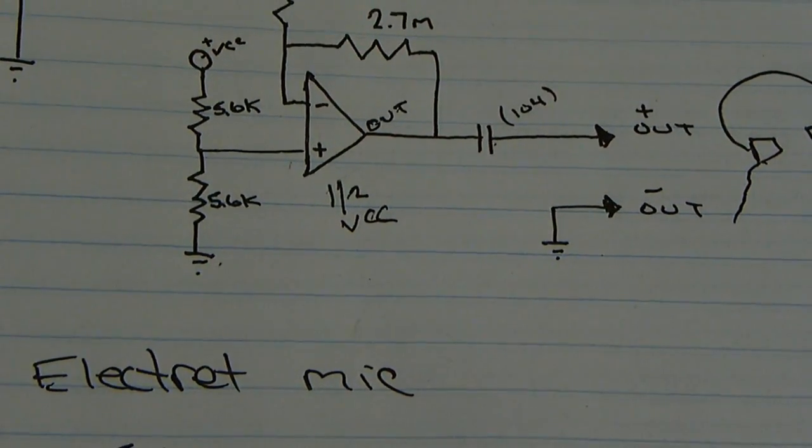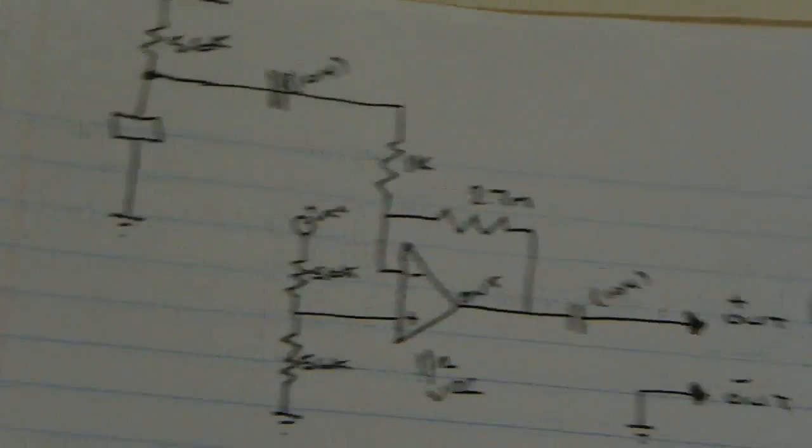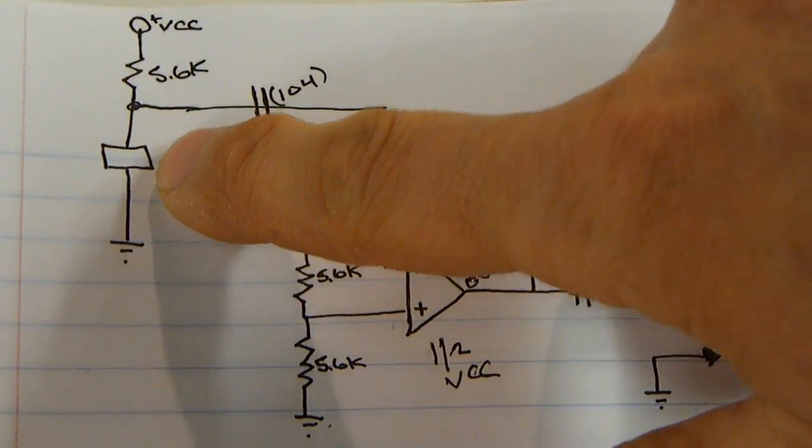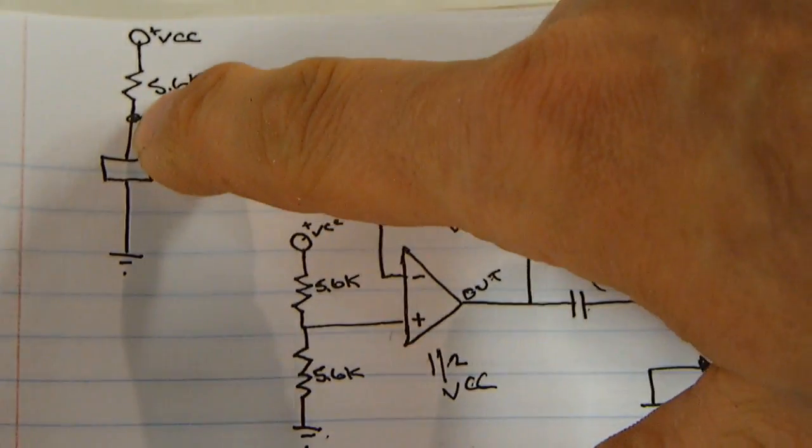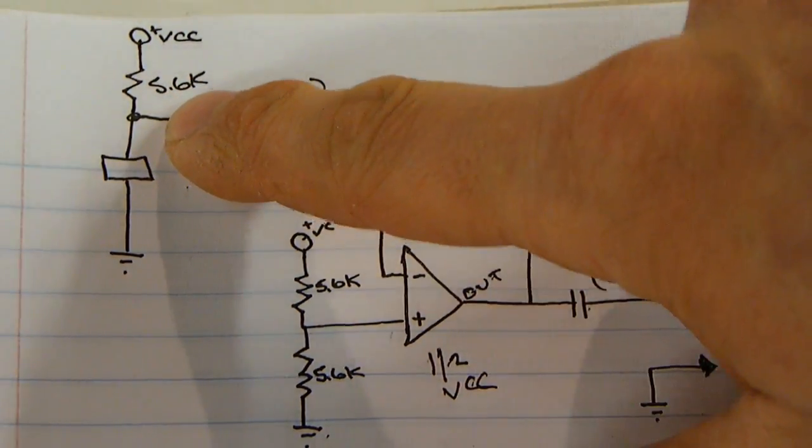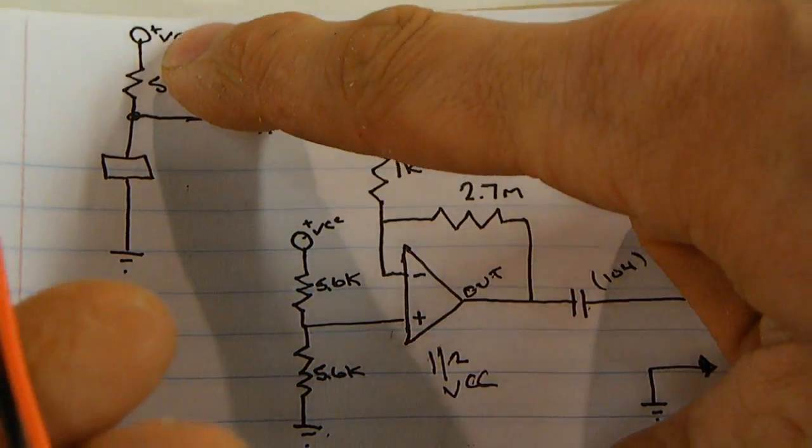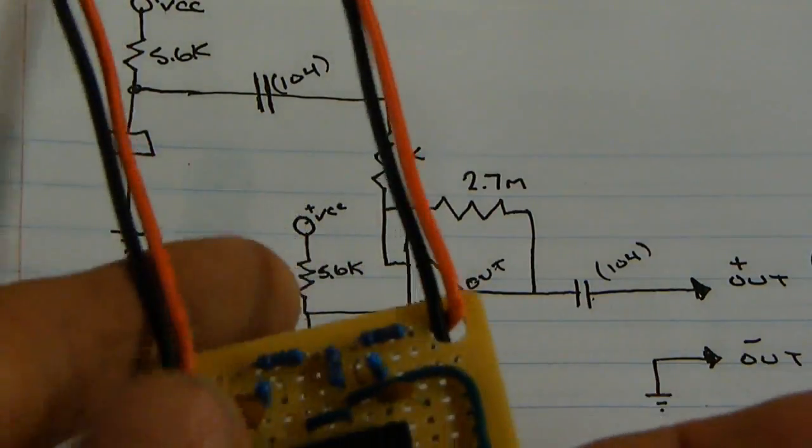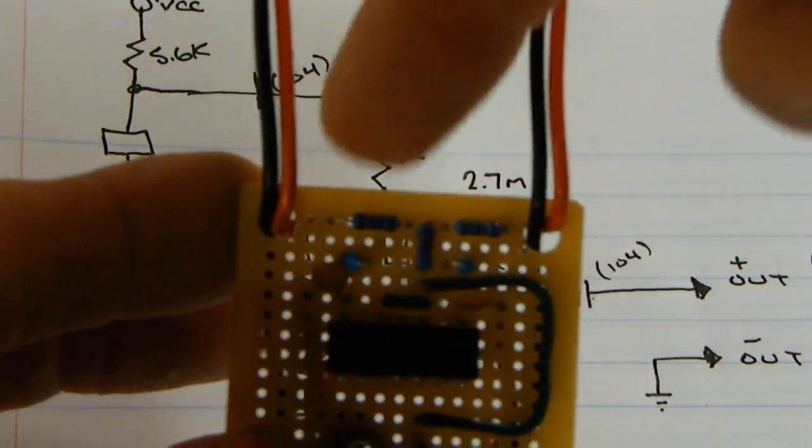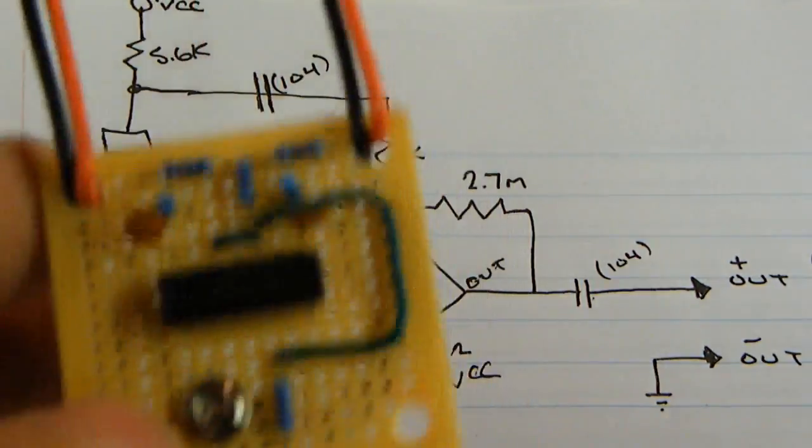And those are connected to... The positive leads are connected to the resistors here and here, and those are going to be connected to the power source, which will connect to here. As you can see in the schematic, the electret microphone one end is connected to the ground, or negative terminal of the battery, and the other one is connected through a 5.6K resistor to, that's these guys, to the voltage source. And these both are the 5.6K.